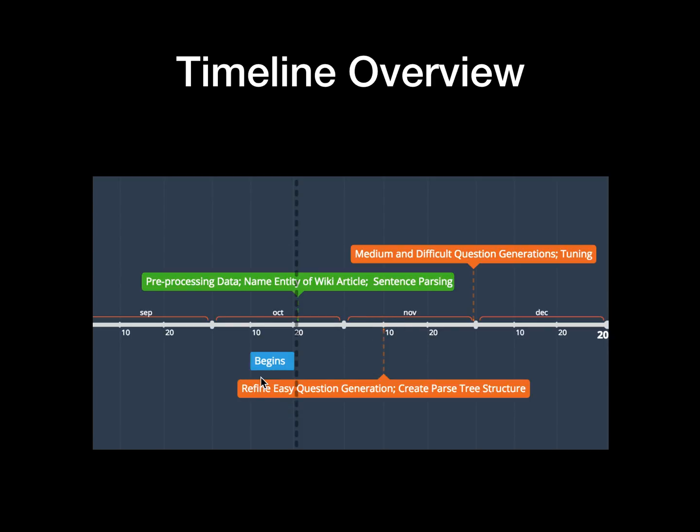What we are going to do next in the next few weeks is to refine easy question generation, create parse trees, and use that to work on generating medium and difficult questions in the future. We will also create a ranker that will evaluate how well a sentence is performing and then give the top K, the highest ranked sentences that we would like to output.